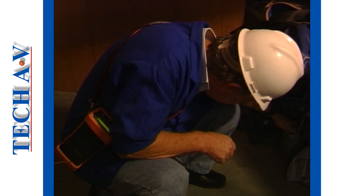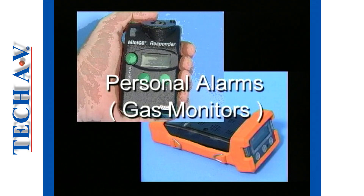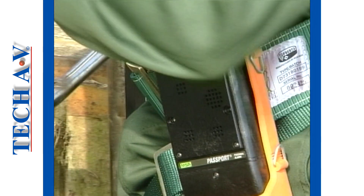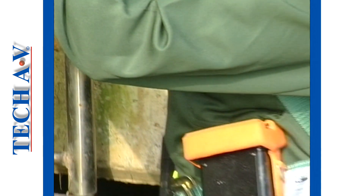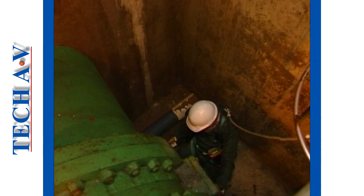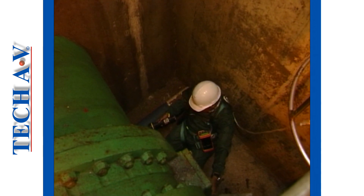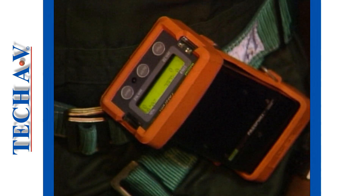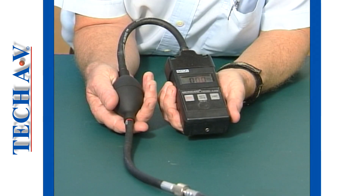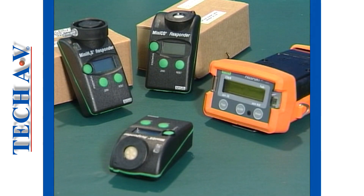Having assessed or sampled the atmosphere within a space, it must thereafter be monitored to provide ample warning to the occupants should a dangerous atmosphere develop during the time that the space is occupied. The instruments required by persons entering a space are generally referred to as personal alarms or gas monitors. These instruments are designed to be carried by the person entering a space and kept switched on at all times for the sole purpose of monitoring in the event of a change in atmospheric conditions.